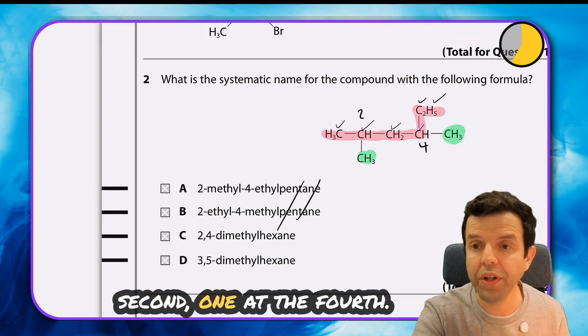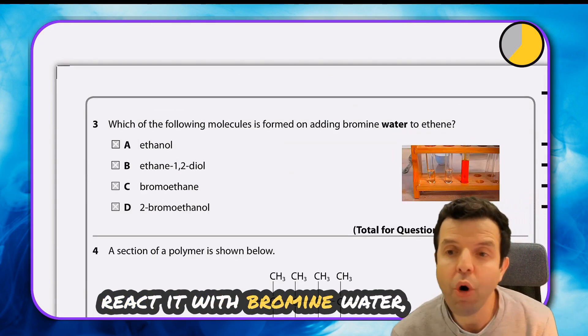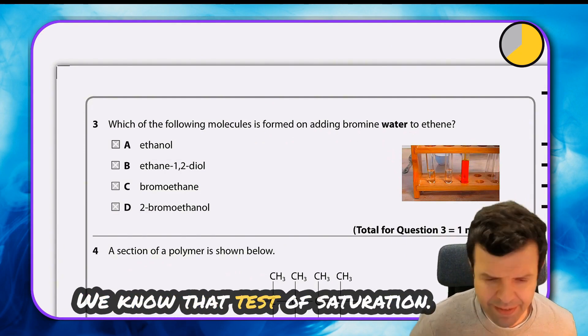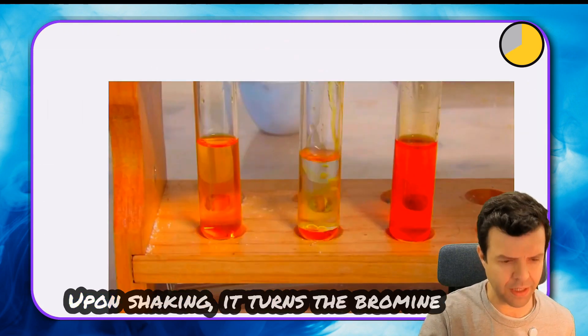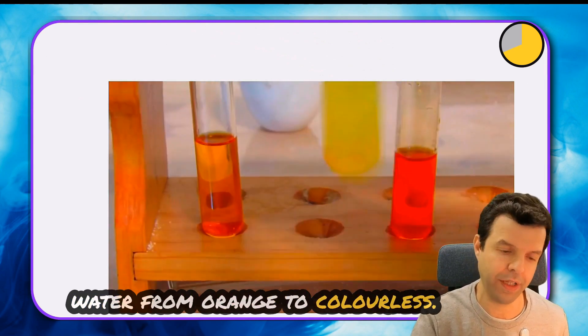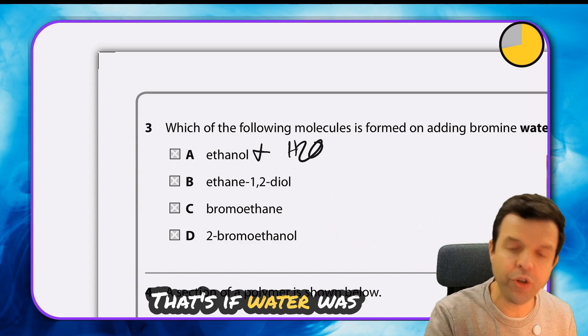Second page: if you take an alkene and react it with bromine water, what are you expected to get? We know that test of saturation - alkene turns bromine water colorless upon shaking. It turns the bromine water from orange to colorless. The product we get here is not the first - that's if water was only the reactant.